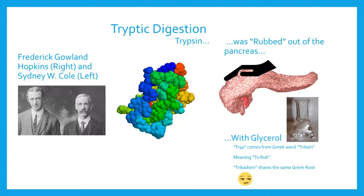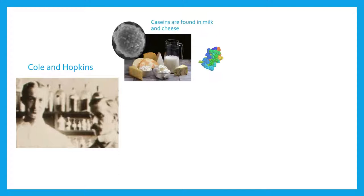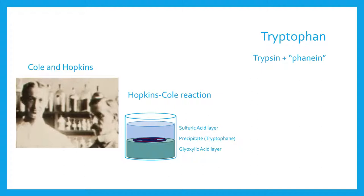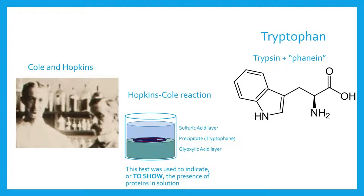Using this new tryptic digestion, Hopkins and Cole isolated a novel compound from caseins, the proteins found in milk. They mixed the compound with glyoxalic acid and then slowly titrated it with a concentrated sulfuric acid solution. The reaction between the two layers formed a reddish-purple precipitate called tryptophan. The name tryptophan is a portmanteau of trypsin and the Greek root 'phanin', which means to show, as this reaction would be used to indicate the presence of proteins in solution.